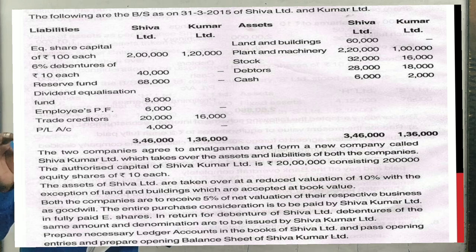Equity share capital 100 each, 6% debentures, reserves, reserve fund, dividend equalization fund, employees provident fund, trade creditors, profit and loss account, land building, plant machinery, stock, debtors, cash.